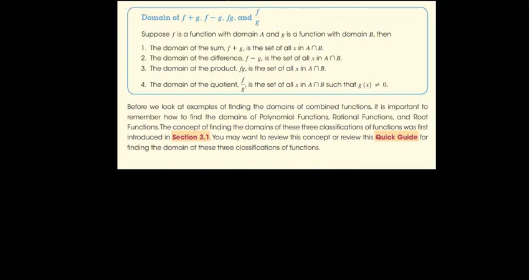This problem combines everything we've done. Given f and g, we need to find f plus g, f minus g, f times g, and f divided by g, plus the domain of each. The domain of the first three — addition, subtraction, and multiplication — will be exactly the same. Division gets one small tweak.